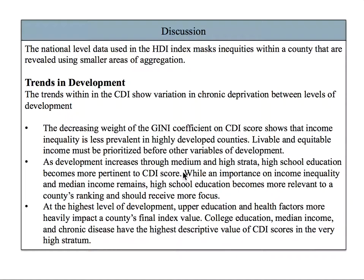While an importance on income inequality and median income remains, high school education becomes more relevant to a county's ranking and should receive the most focus. At the highest level of development, upper education and health factors more heavily impact a county's final index value. College education, median income, and chronic disease have the highest descriptive value of CDI scores and should be addressed first.